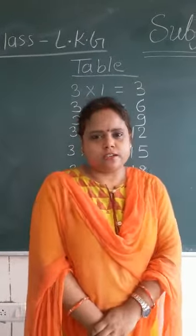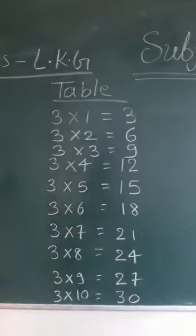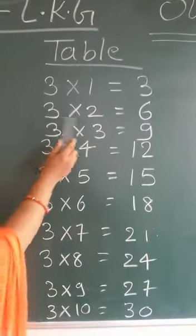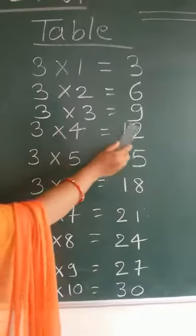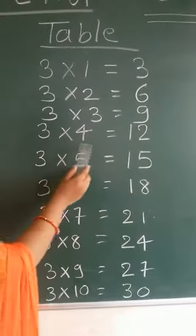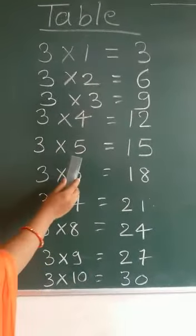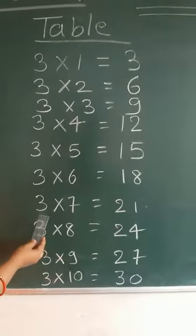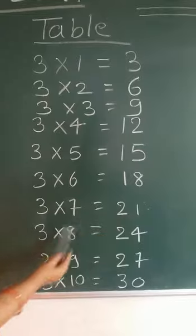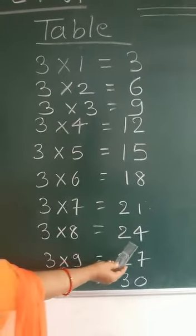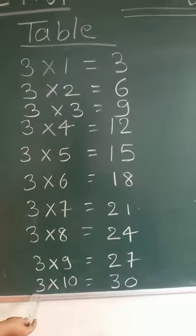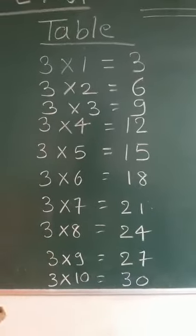So, let's start. 3 1s are 3, 3 2s are 6, 3 3s are 9, 3 4s are 12, 3 5s are 15, 3 6s are 18, 3 7s are 21, 3 8s are 24, 3 9s are 27, 3 10s are 30.